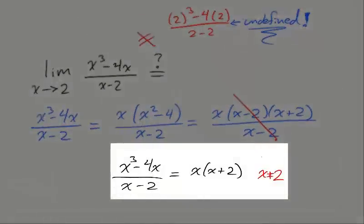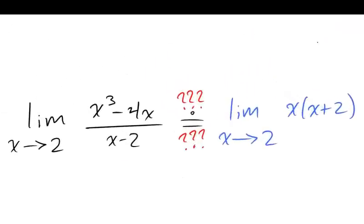To correct this error, it is important to write that x can't be 2 in order for this equality to hold. The natural question to ask is, what is the connection between the limit of our rational function and the limit of the polynomial that equals everywhere but x equals 2?